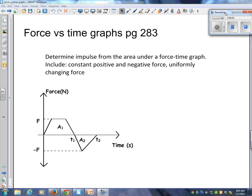Force versus time graphs, page 283. The reason for doing this is we're going to determine the impulse from the area under a force time graph, and we're going to include constant positive and negative force, and a uniformly changing force.